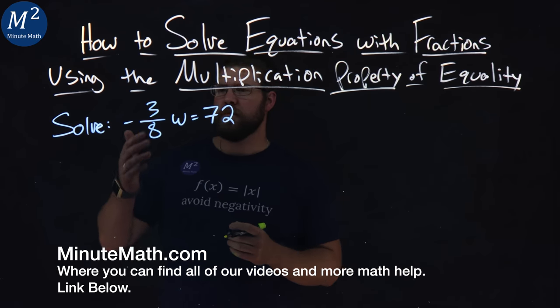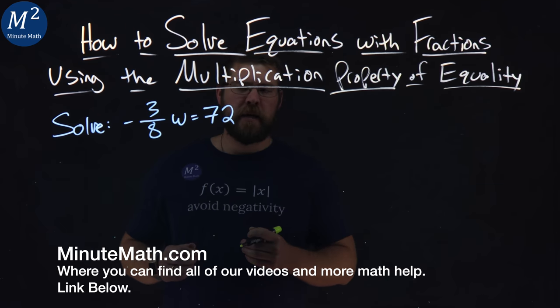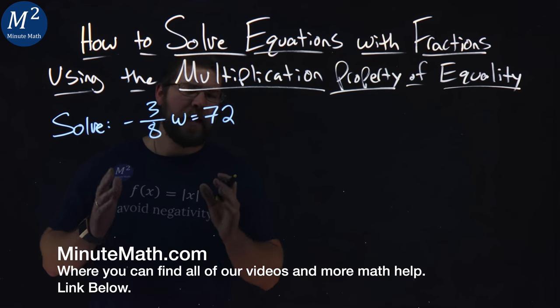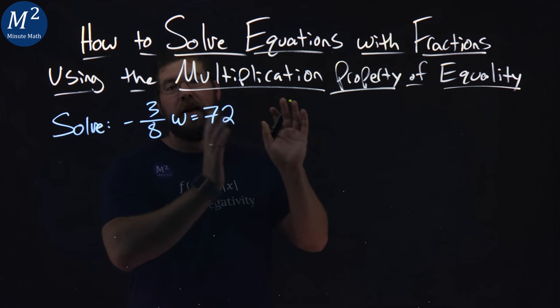We're given this problem right here. Solve negative 3 over 8w equals 72. Well, multiplication property of equality states we can multiply one side of the equation by the same number as the other side.